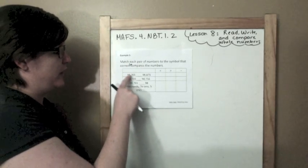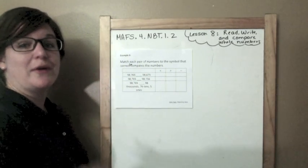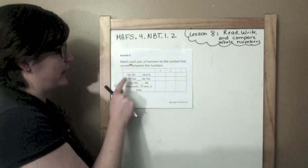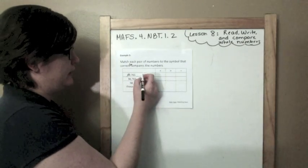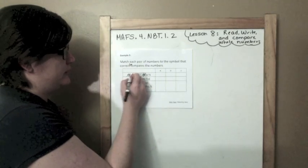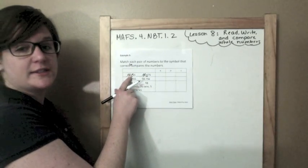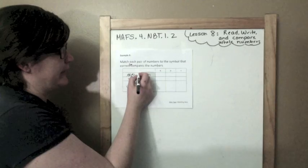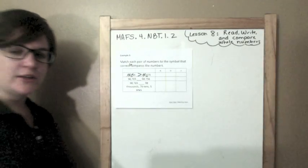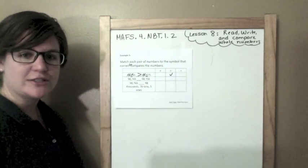Watch — we have 1, 2, 3, 4, 5 digits and 1, 2, 3, 4, 5 digits. Now I compare them. 9 and 9, they are the same, so I'm moving on. 8 and 8, they are the same, so I'm moving on. 7 and 6 — they're different. Which one is greater, 7 or 6? The 7 is greater. For those of you who learned about alligators, the alligator wants to eat the one that is greater. So I'm going to find this symbol right here and put a little check there.